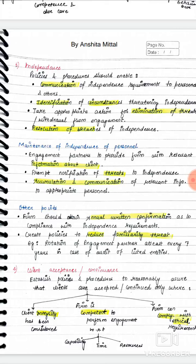These words are important to understand — not just memorize. When we understand things, we know which word to use. Your firm should have policies and procedures to provide reasonable assurance that clients are either accepted or continued only when there is full confidence in the client's integrity, when your firm has the required personnel, technology, and professional competence to perform the audit.